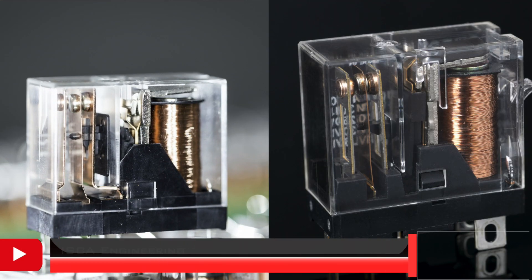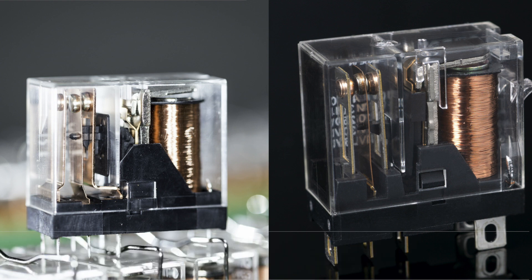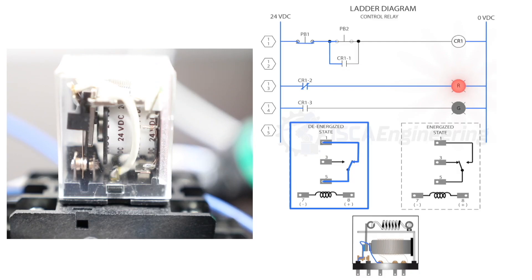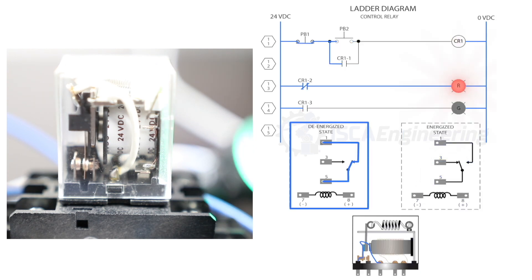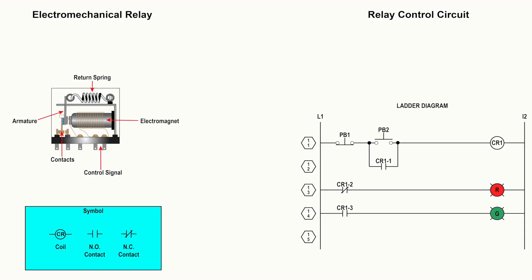The first device we'll start off with is the electromechanical relay. We'll briefly talk about them since we will cover more in a future chapter. An electromechanical relay is a device that mechanically switches electric circuits. It consists of a coil, armature, spring, movable contact, and fixed contacts.